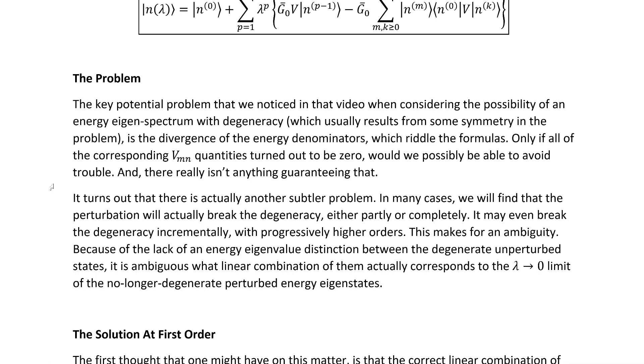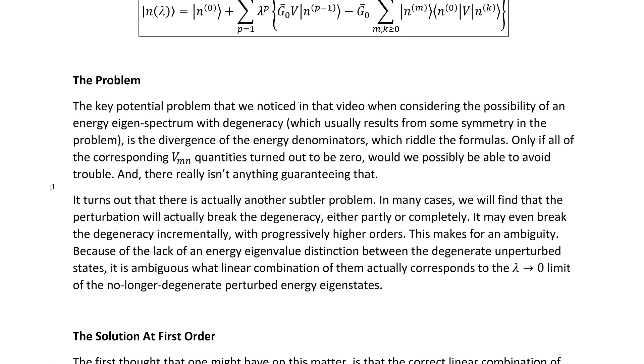So we're going to have to actually get creative. It turns out there's actually another subtler problem. In many cases, we'll find that the perturbation will actually break the degeneracy, either partially or completely. It may even break the degeneracy incrementally with progressively higher orders, although that's not the most important fact just yet. This breaking of the degeneracy by the perturbation makes for an ambiguity. Because of the lack of an energy eigenvalue distinction between the degenerate unperturbed state, it's ambiguous what linear combination actually corresponds to the lambda equals zero limit of the no longer degenerate perturbed energy eigenstates, or at least partially no longer degenerate.